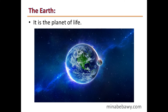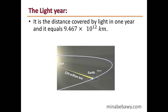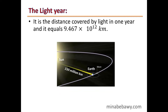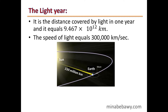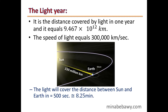The Earth is the planet of life. A light year is the distance covered by light in one year, and it equals 9.467 × 10¹² kilometers. The speed of light equals 300,000 kilometers per second. Using these numbers, light covers the distance between the sun and Earth in 500 seconds, which is approximately 8.25 minutes.